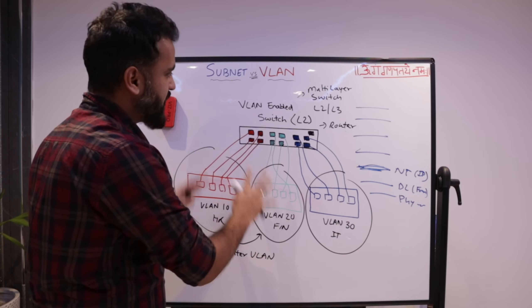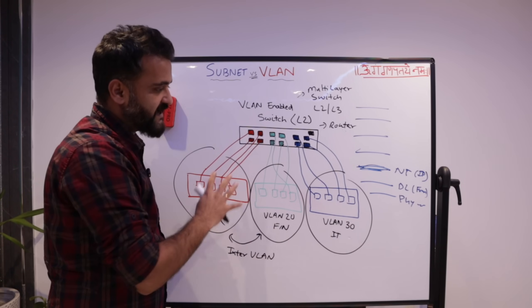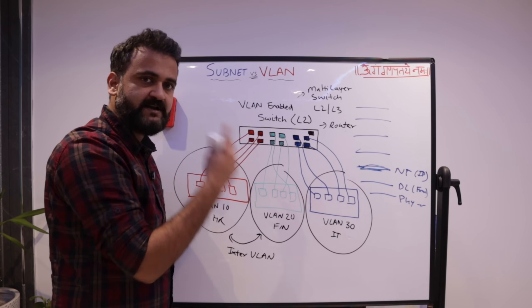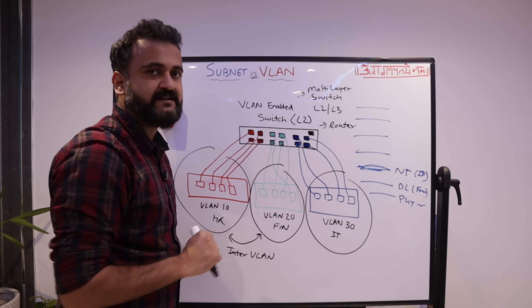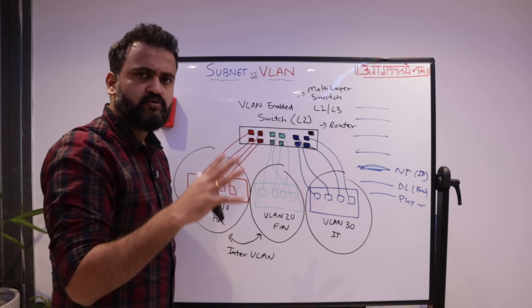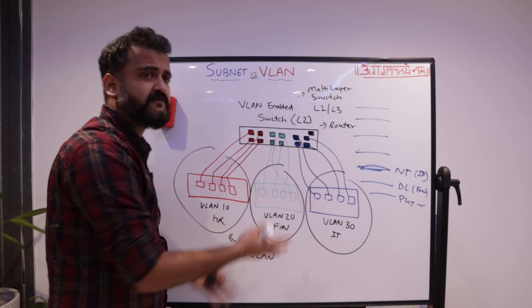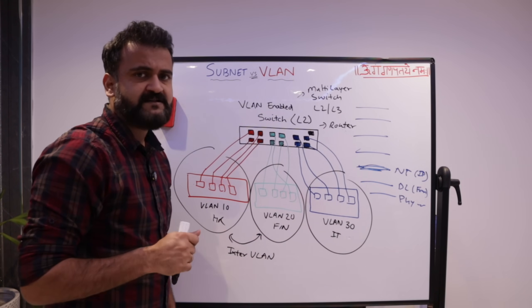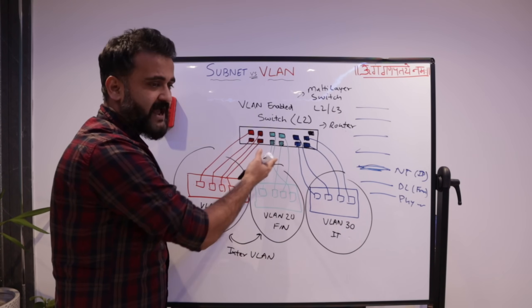So it has its plus and minus. But the best part is you can combine both. You can combine VLAN as well as subnetting to actually take advantage of segregating the network at a logical level. And wherever necessary, you can also go to layer three at IP addressing level and segregate the network there as well.